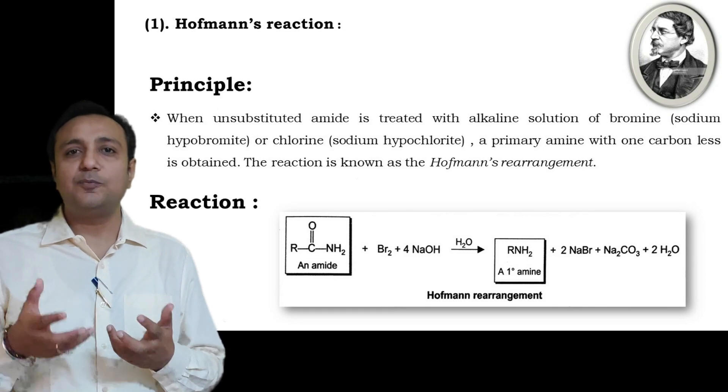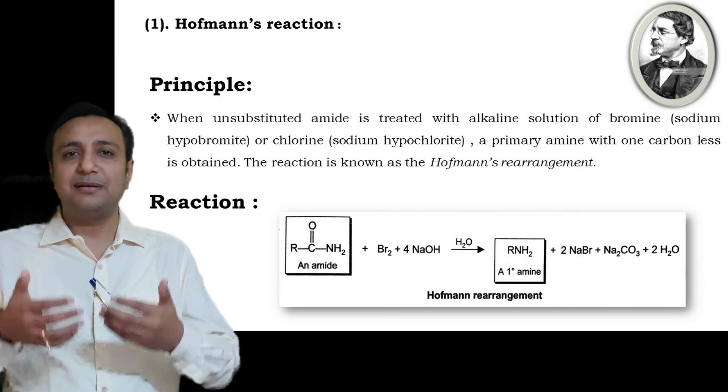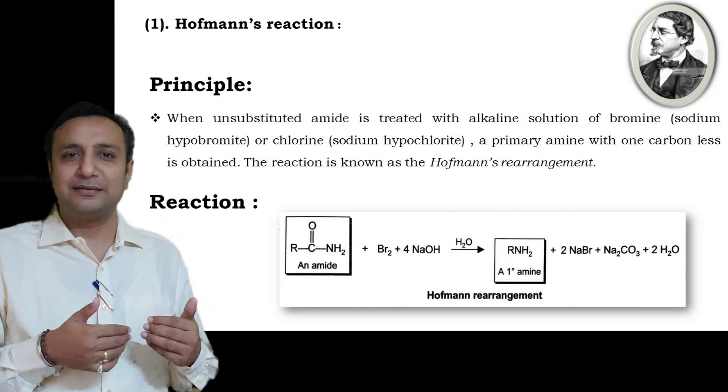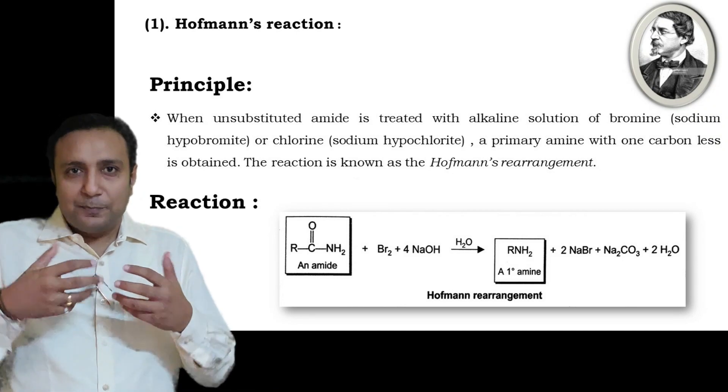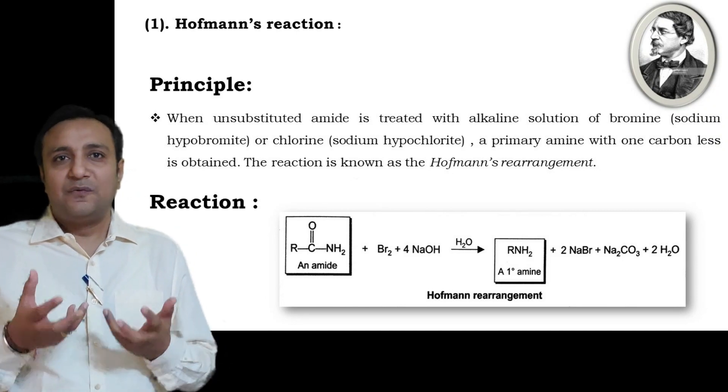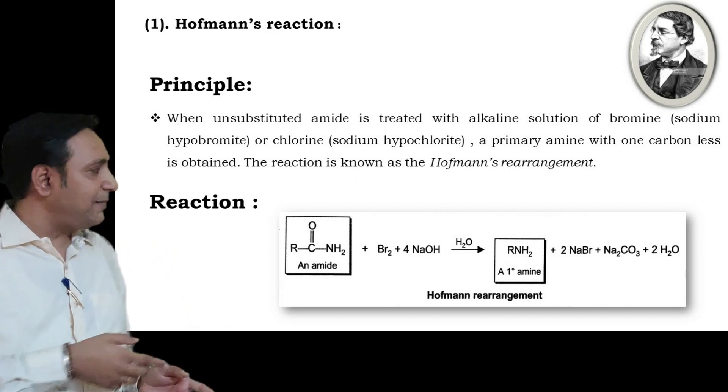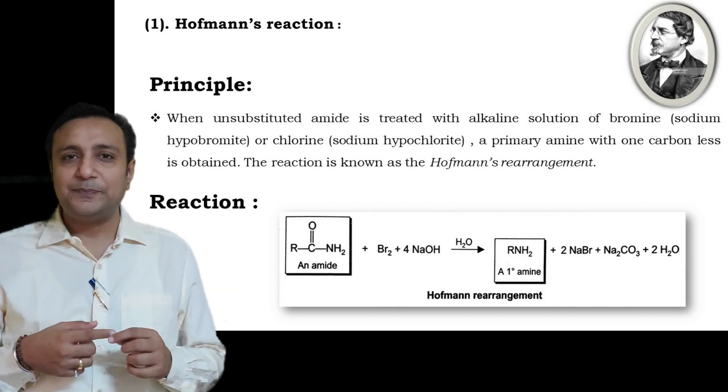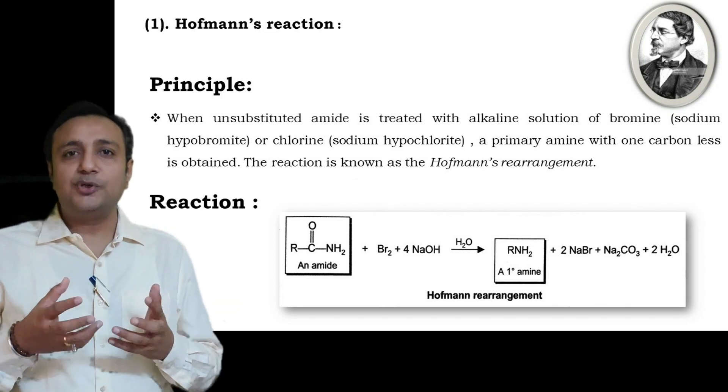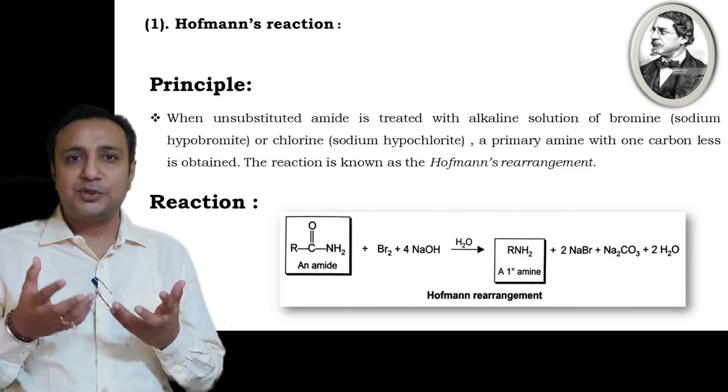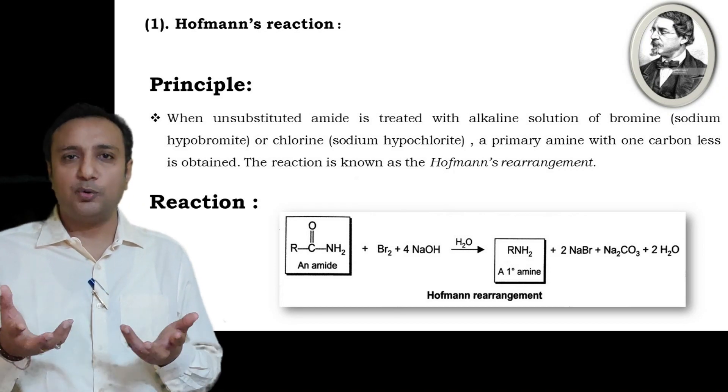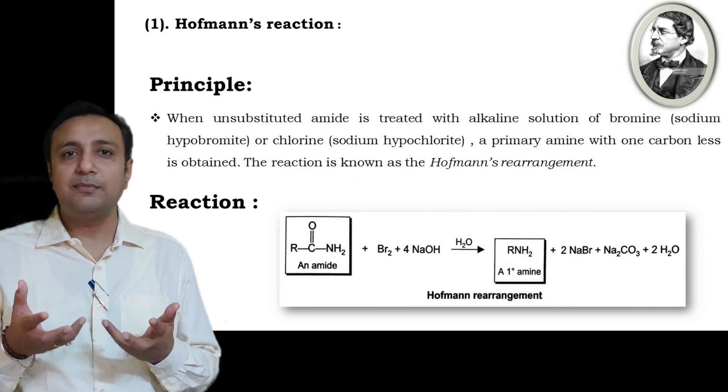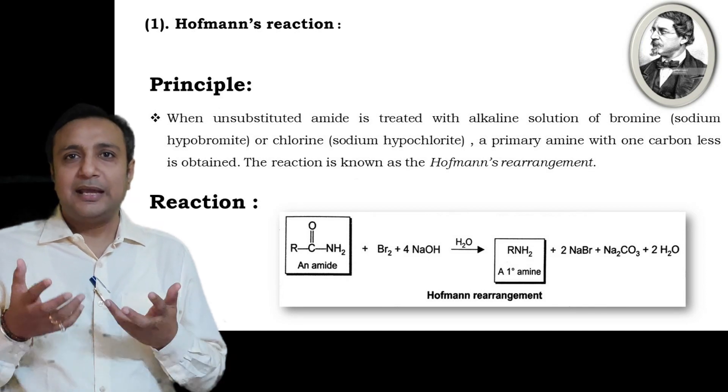In its principle, when an unsubstituted amide is treated with an alkaline solution of bromine (sodium hypobromite) or chlorine (sodium hypochlorite), a primary amine with one carbon less is obtained. This reaction is known as the Hoffmann rearrangement.